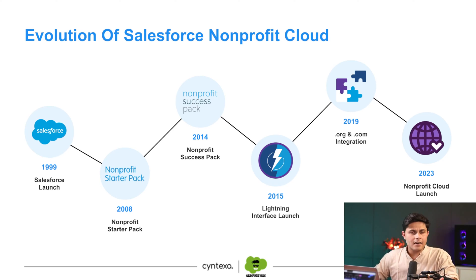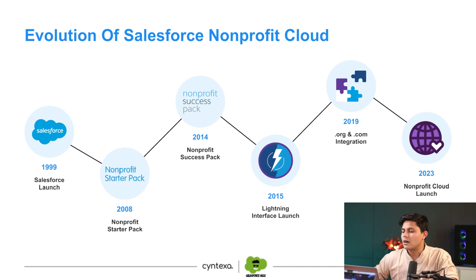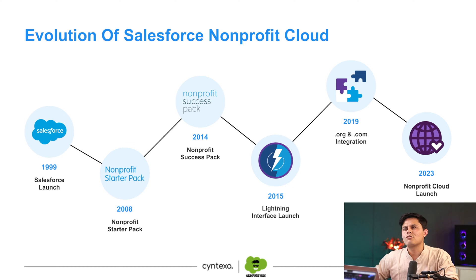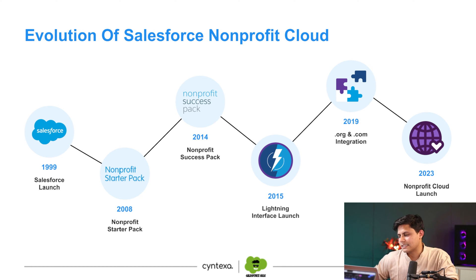Let's understand the evolution of Salesforce Nonprofit Cloud. In 1999 Salesforce started; the Nonprofit Starter Pack came in 2008; it became the Nonprofit Success Pack in 2014; the Lightning interface was announced in 2015 and launched in 2016; in 2019 the .org and .com integration happened; and in 2023 Nonprofit Cloud was launched.